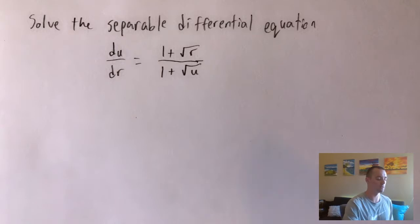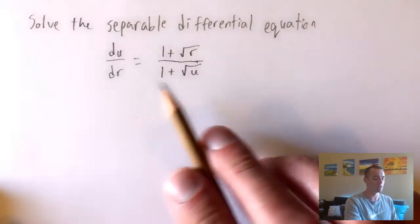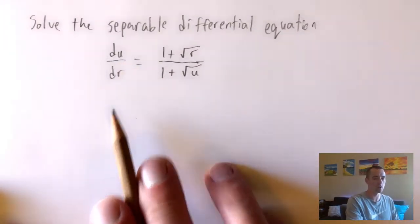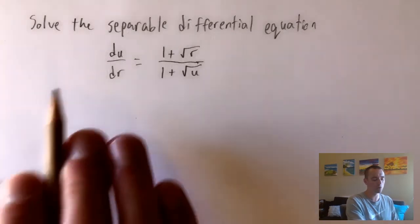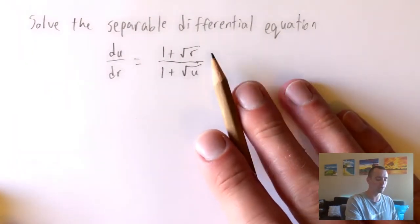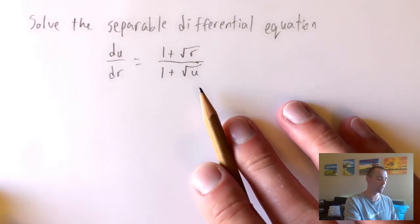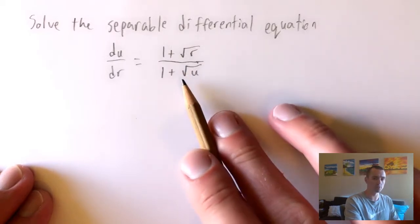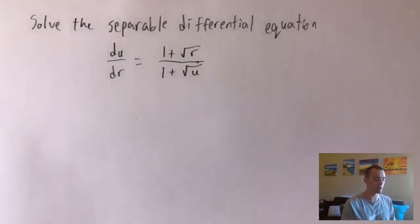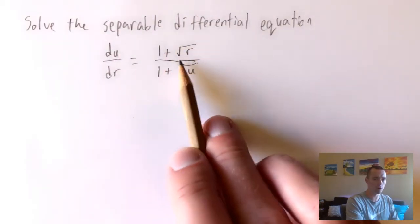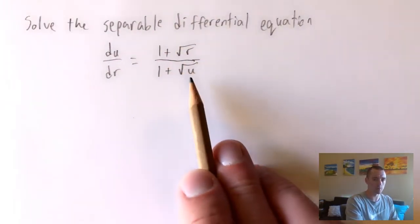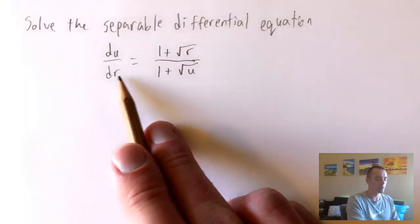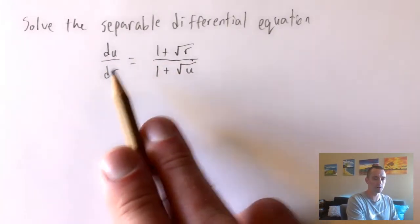What that formula says is we want to get a differential equation so that we have dy/dx or du/dr — whatever your variables are — on one side, equaling some function of one of your variables divided by some function of the other variable. The idea here is our r's and our u's are basically separated from each other already. We have this function of r in the numerator of our fraction and this function of u in the denominator.